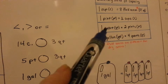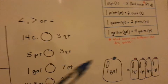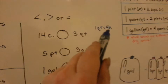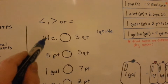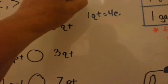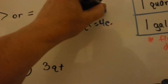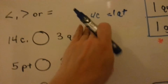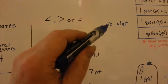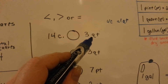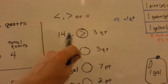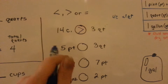2 pints has 4 cups, and there are 2 pints in a quart, so a quart must have 4 cups — 1 quart equals 4 cups. We have 14 cups. If 4 cups equals 1 quart, what would 3 quarts be? We multiply 4 times 3 and get 12. So 3 quarts equals 12 cups. The 14 cups is more. Big mouth eats big number — so the greater than sign heads that way.